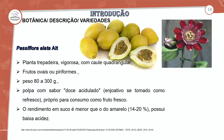A Passiflora alata é uma planta trepadeira vigorosa com caule quadrangular. A estrutura da flor é bem diferente em relação às outras variedades. Os frutos têm características ovais ou piriformes, pesando de 80 a 300 gramas. A polpa tem sabor doce e acidulado, proporcionando frescor e consumo do fruto in natura — não é aquele ácido azedo que a gente conhece do maracujá. O rendimento de suco é menor que o do amarelo, entre 14 a 20%, e possui acidez baixíssima.